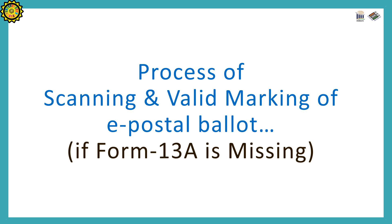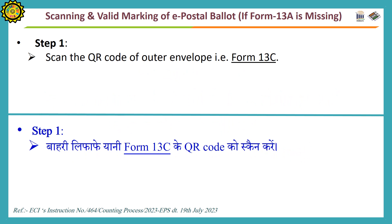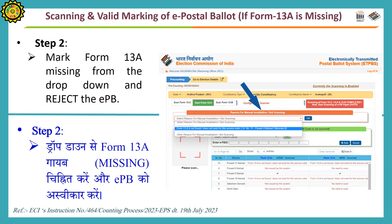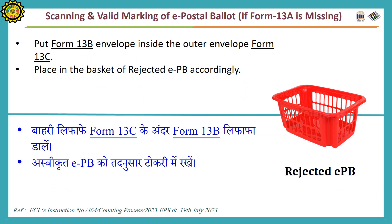Process of scanning and valid marking of E-PB if form 13A is missing. Scan the QR code of outer envelope form 13C. After opening, if form 13A is not found inside form 13C, mark form 13A as missing from the drop-down menu and reject the E-Poster Ballot. Put form 13B envelope back inside form 13C and place it in the basket of rejected E-PB.